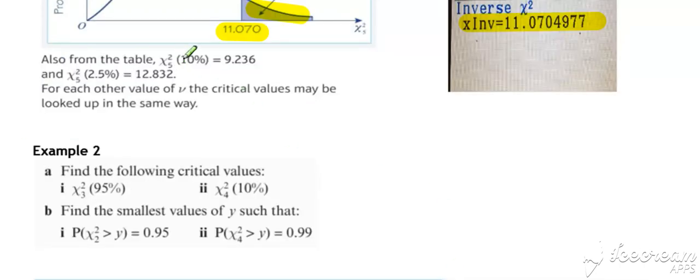Similarly, you could pick off the 10% significance level from either source, or the 2.5% significance level from either source. You can find those in the tables or from your calculator in a similar way.